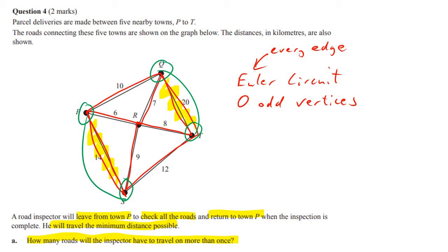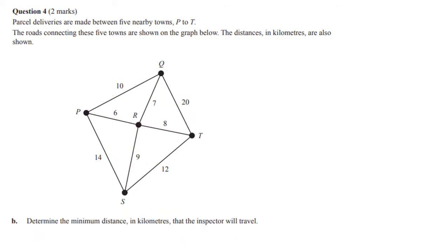So the inspector has to travel two roads twice. Now, for determining the minimum distance in kilometres, this is an Euler circuit problem, so we have to get rid of the odd vertices. If we're going to repeat any roads, we need to repeat the ones with the lowest value.